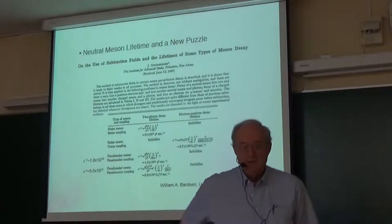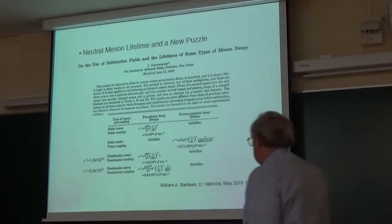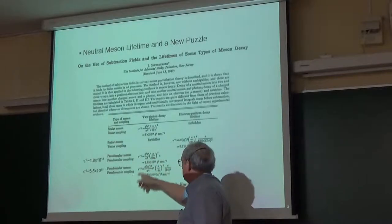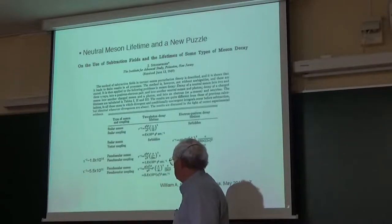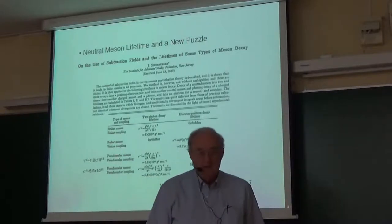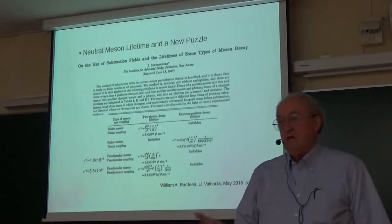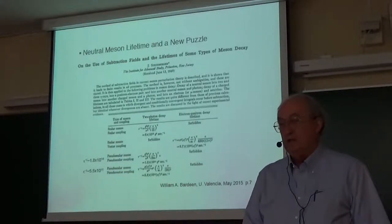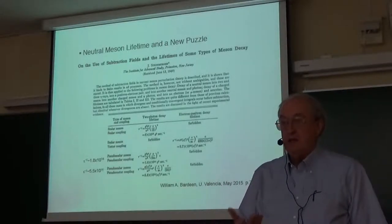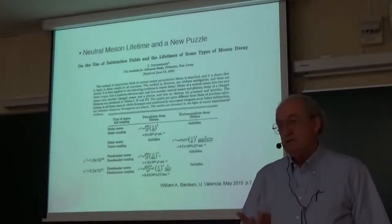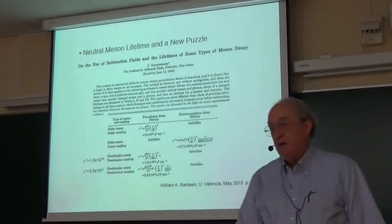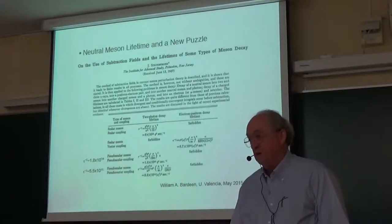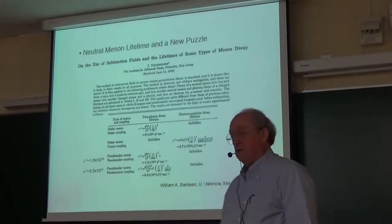It was puzzling that the pseudo-scalar coupling of the particle to the proton and the pseudo-vector coupling gave much different decay rates — the decay rate is much faster for the pseudo-scalar coupling than the pseudo-vector coupling. The puzzle is that the divergence of the pseudo-vector (axial vector) current is just the pseudo-scalar current, so they should agree. Steinberger basically didn't understand this result, and it's said that at this point he decided theory was unreliable and focused the rest of his career on experiments and accelerators — a very successful career.